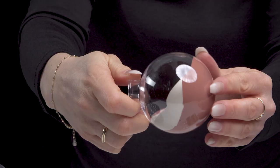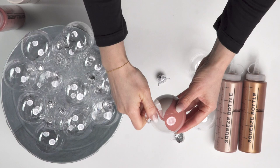Add your paint and swirl, rotating the ball so the paint spreads along the inside evenly.